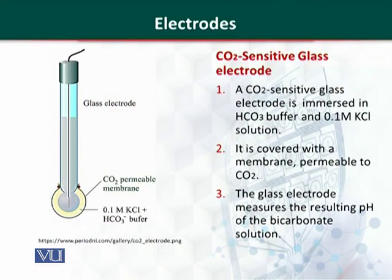The first type of electrode we are going to discuss is the carbon dioxide-sensitive glass electrode. This electrode is used to determine the amount of carbon dioxide in the blood. It is a glass electrode that uses a gas permeable membrane, which keeps the electrode solution separate from the biological sample.